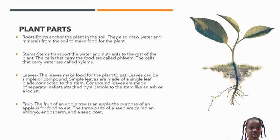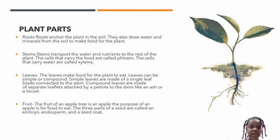Plant Parts: Roots anchor the plant in the soil. They also draw water and minerals from the soil to make food for the plant. Stems transport the water and nutrients to the rest of the plant. The cells that carry the food are called phloem. The cells that carry the water are called xylem.